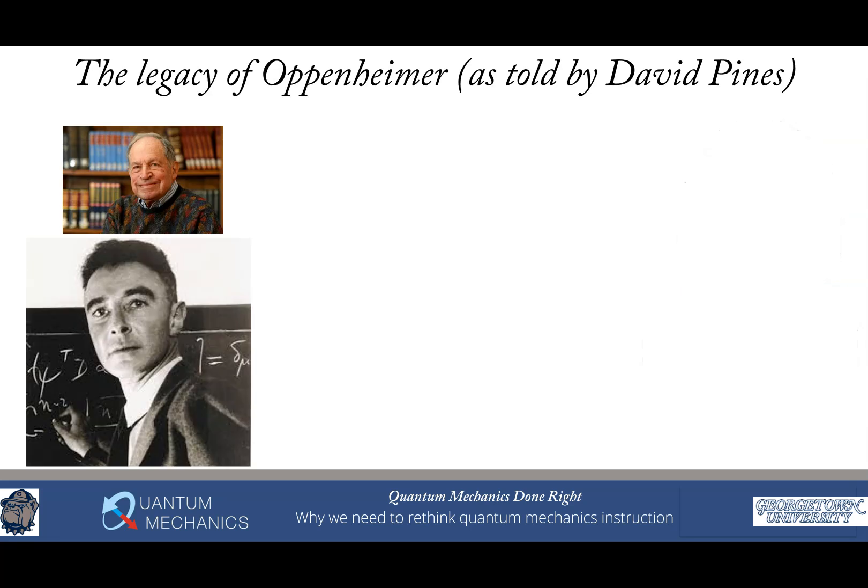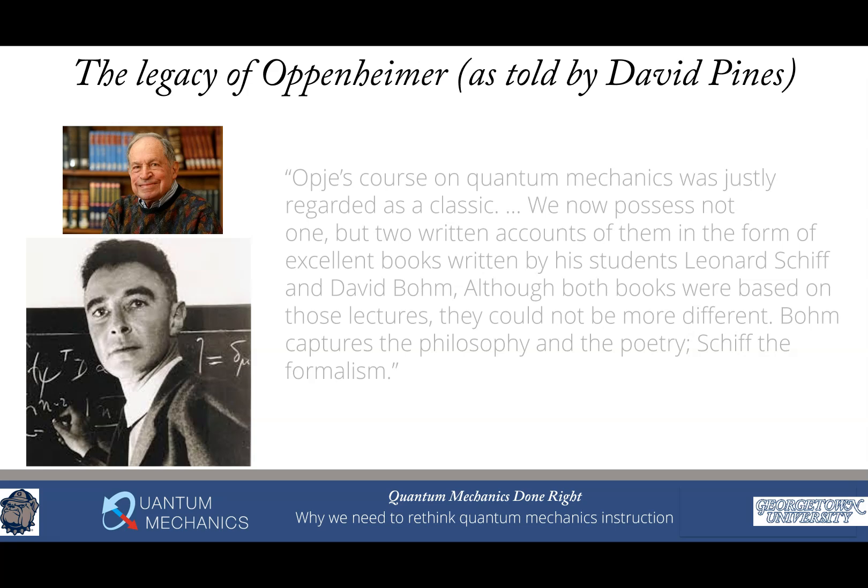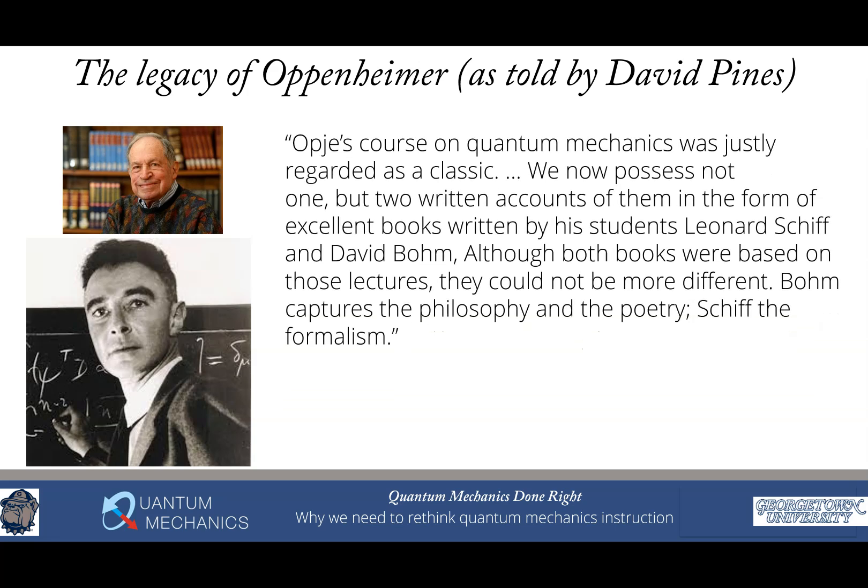The legacy actually comes from Oppenheimer. David Pines, who was a student in Oppenheimer's wartime and early postwar quantum mechanics classes at UC Berkeley, wrote about this. He said, Oppie's course on quantum mechanics was justly regarded as a classic. We now possess not one, but two written accounts of them in the form of excellent books written by his students, Leonard Schiff and David Bohm. Although both books were based on those lectures, they couldn't be more different. Bohm captures the philosophy and the poetry, Schiff the formalism.